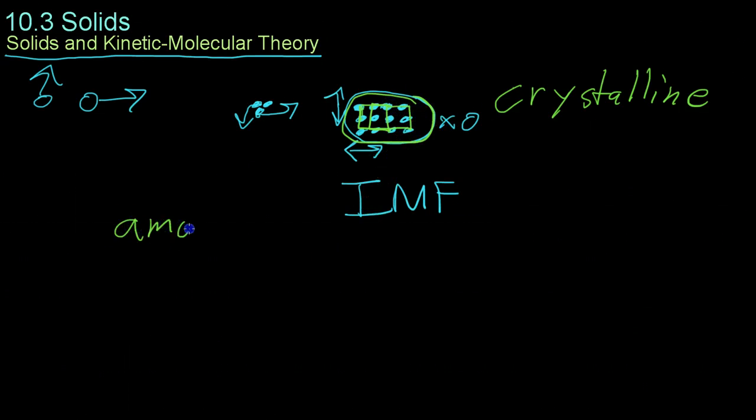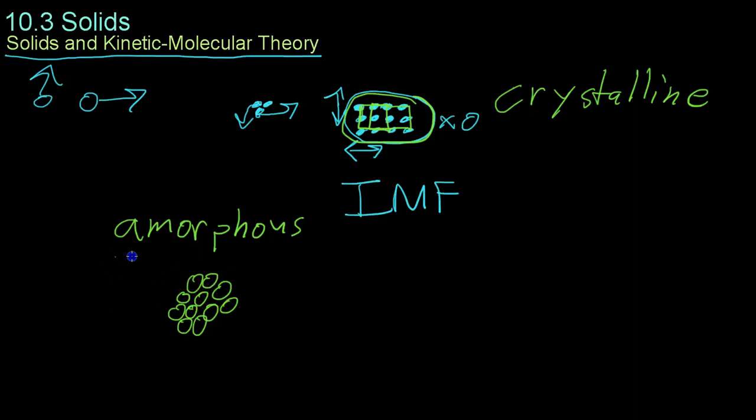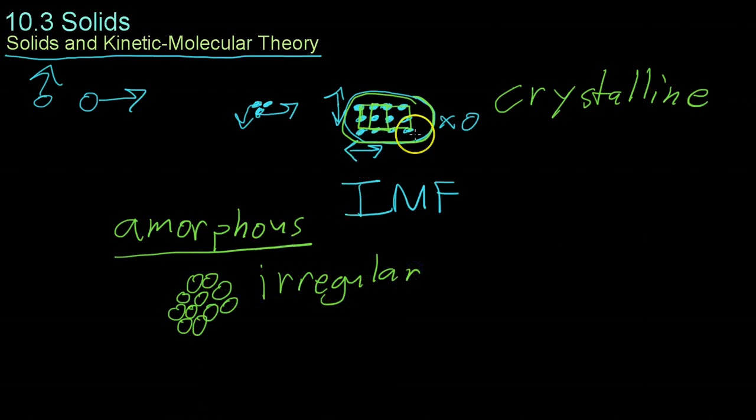And there's also amorphous solids. Amorphous solids don't have a regular geometry like these which form cubes or hexagons. Rather, they're like liquids in that the molecules are randomly distributed. However, they're still locked in place relative to one another. Amorphous solids are irregular in their arrangement but they're still locked in place just as crystalline solids are.